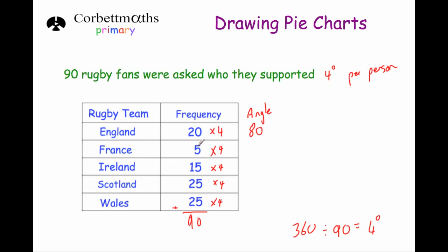For France, 5 people at 4 degrees each — 5 times 4 — that's 20 degrees. Next, Ireland: 15 times 4 is 60 degrees. Scotland: 25 times 4 is 100 degrees. And Wales: 25 times 4 is also 100 degrees. So those are the angles for the pie chart.